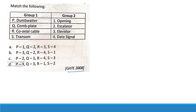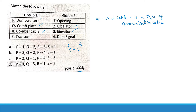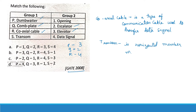In the following matching question, the terms covered include: P (dumbwaiter) comes under elevators; Q (escalator) comes under escalators; R (coaxial cable) — a type of communication cable used to transfer data signals — is option 4; and S (transom) — a horizontal member mainly in openings like doors — is option 1. So the correct answer is P-3, Q-2, R-4, S-1.